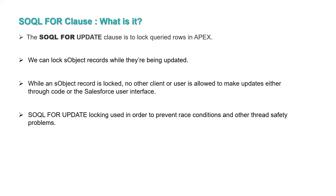We can perform the FOR UPDATE clause with the query rows in Apex. We can lock the queried records while they are being updated. When we want to update any record, we can lock those records so that no other client can update them while another user is updating. While a record is locked, no other client or user is allowed to make updates either through code or through the Salesforce user interface.